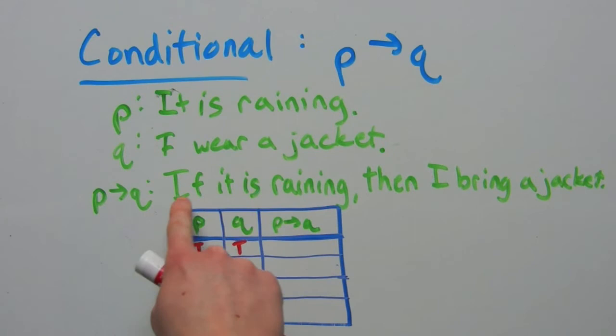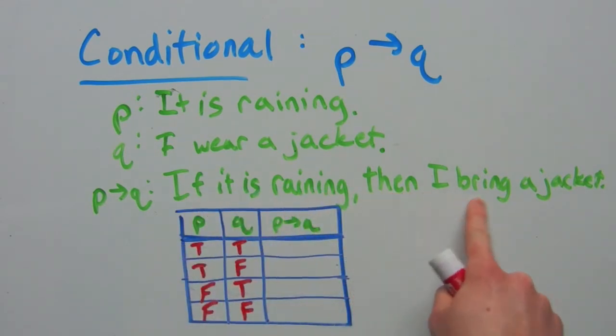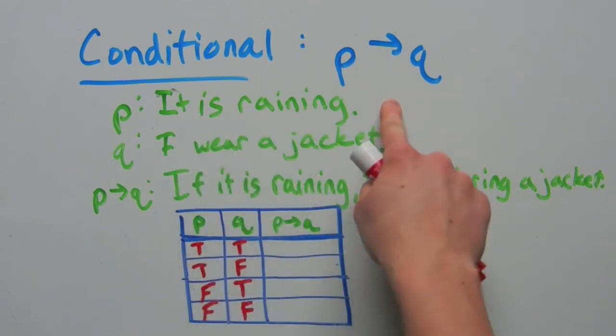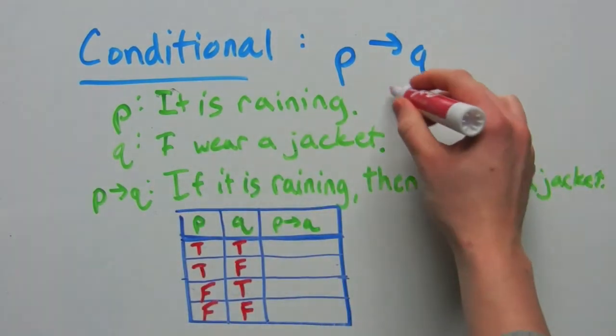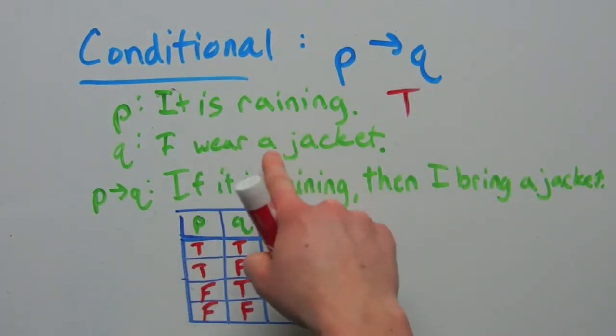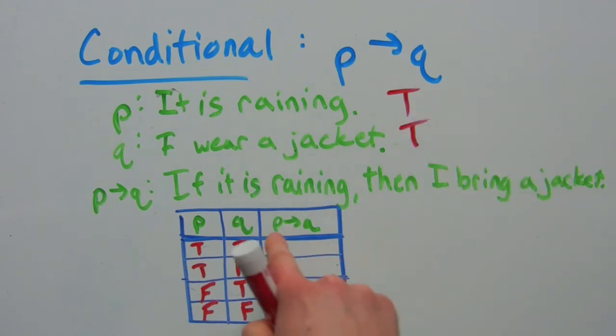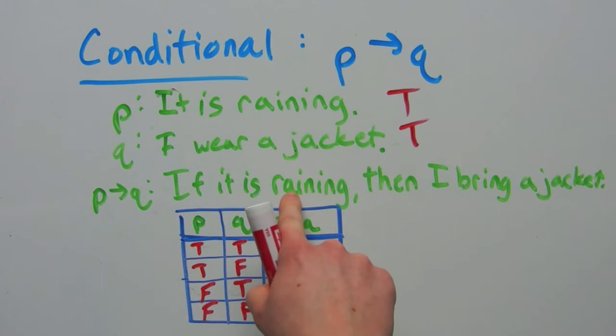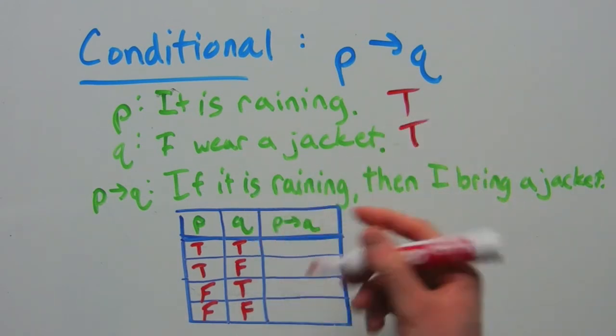Now, I'm saying if it is raining, then I bring a jacket. So if this statement P is true, so if it is raining, and I wear a jacket, then this conditional is true.